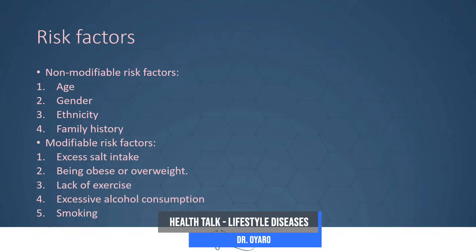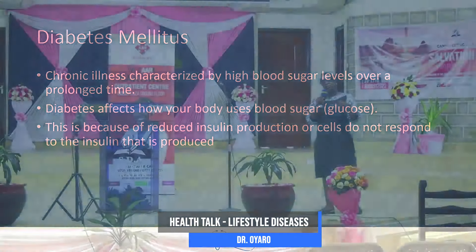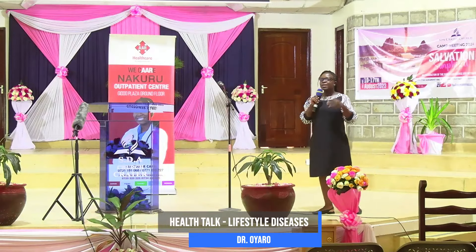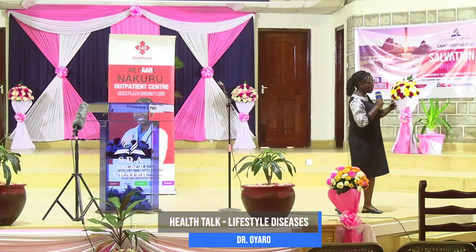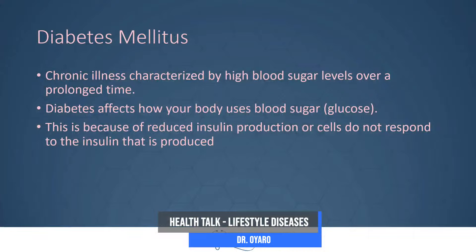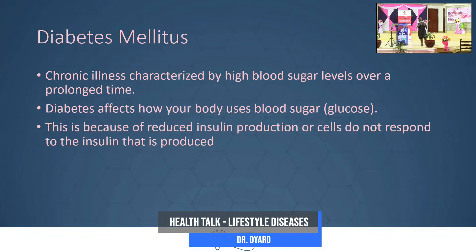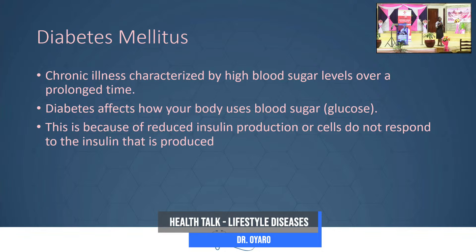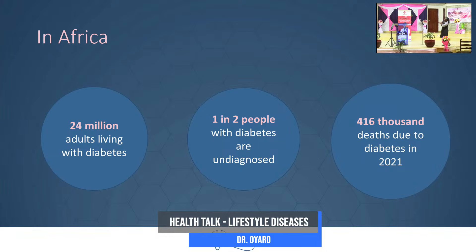Besides hypertension, diabetes is another lifestyle disease — it means chronically elevated blood sugar over a long period of time. If you are diabetic, your body handles food in an abnormal way. Every food you eat is eventually converted to glucose. Some people develop diabetes because the pancreas isn't producing enough insulin; others have enough insulin but it's not working well — those are type 2 diabetes.